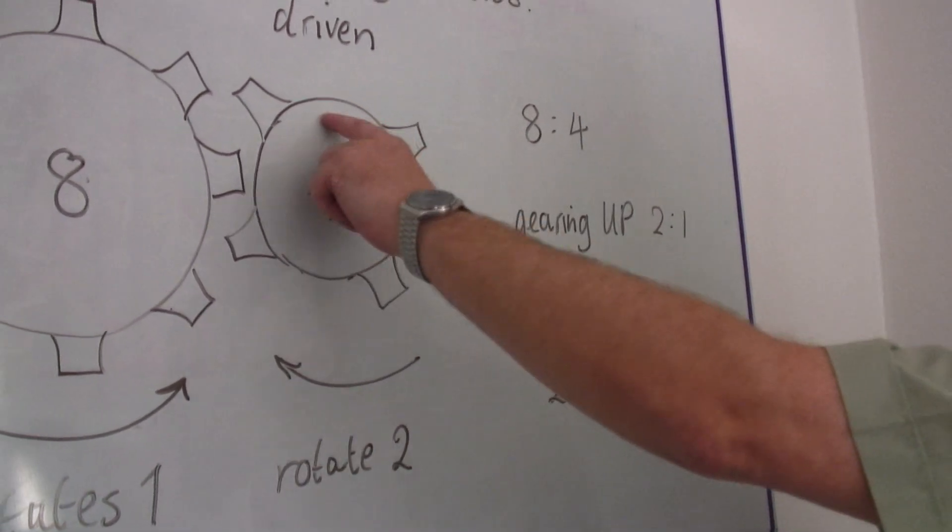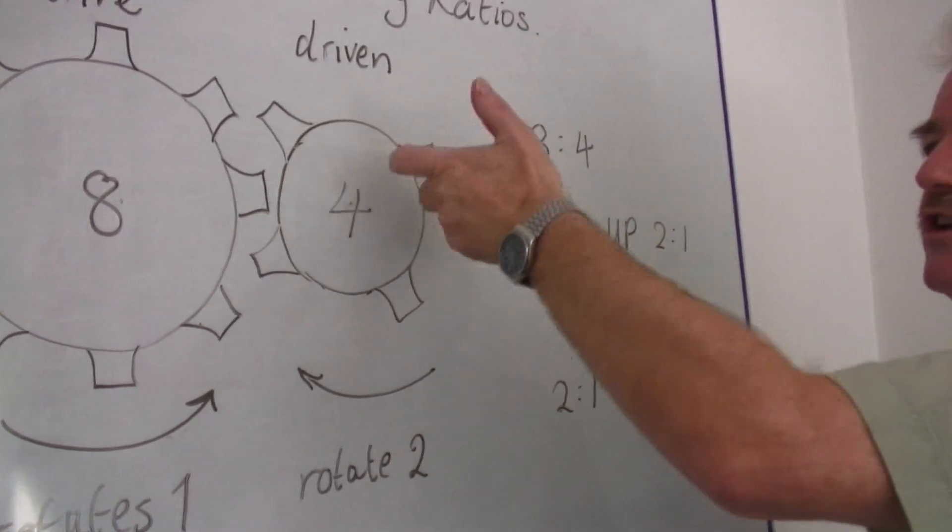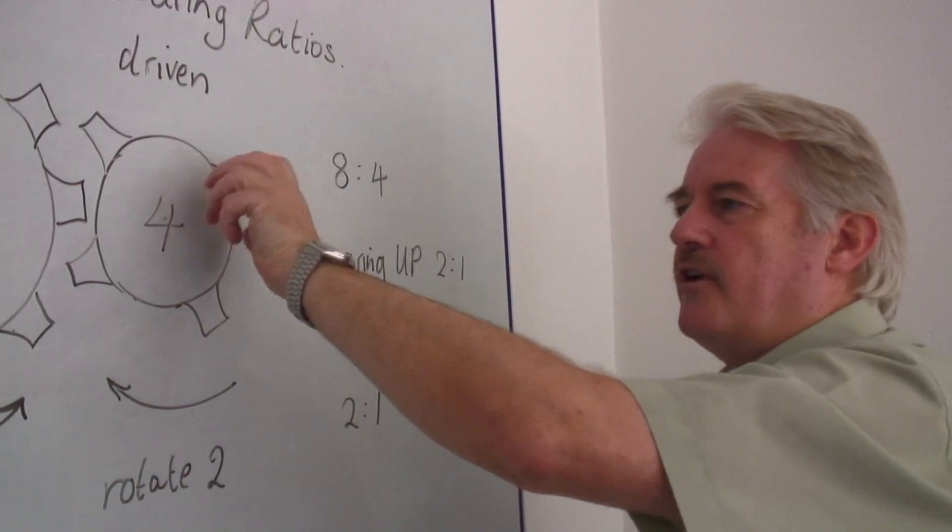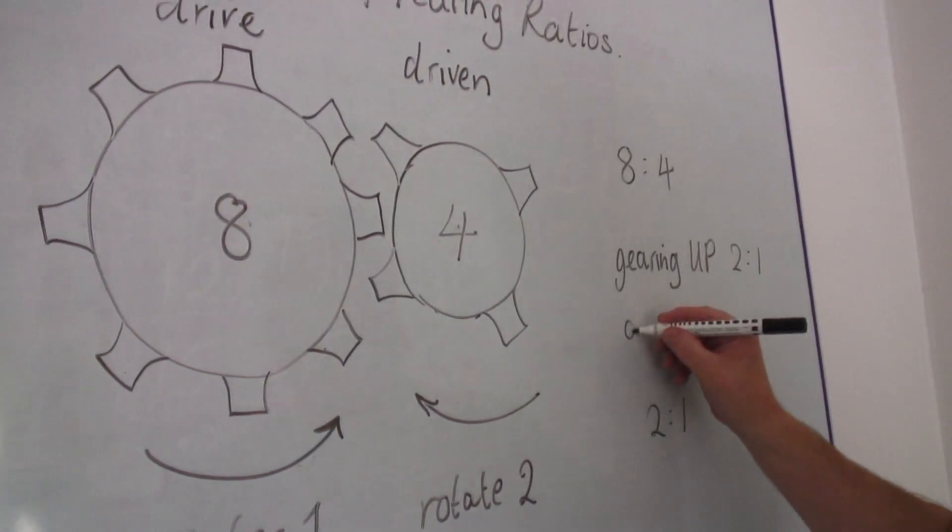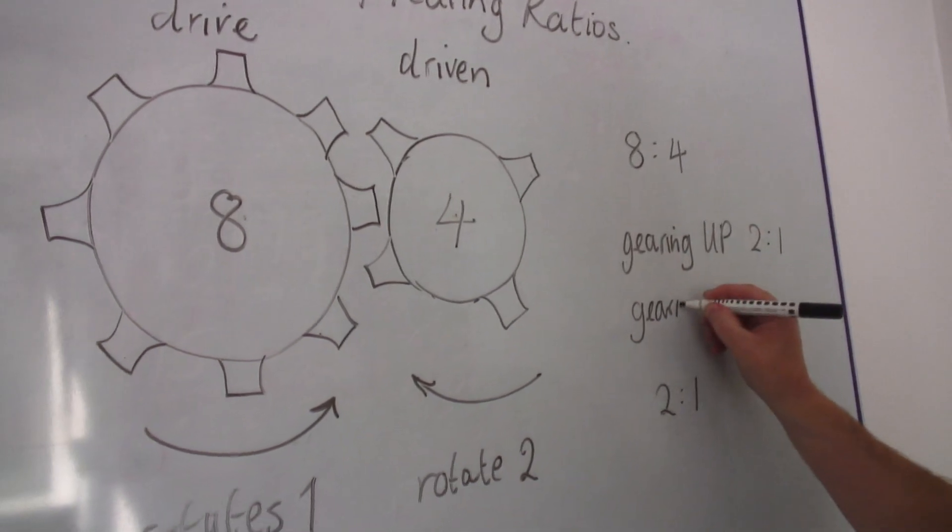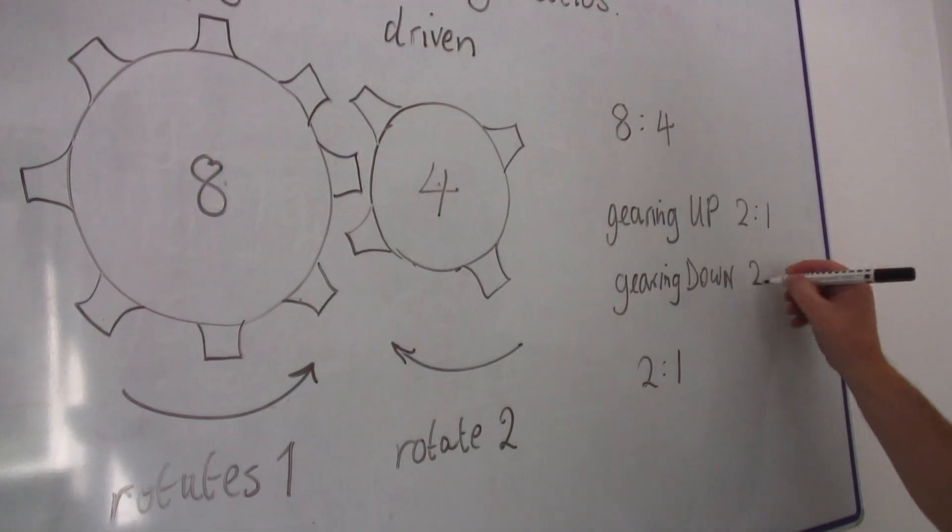However if this was the drive gear, if this was the one I was turning, I will find that this one will turn slower and then I would say a gearing down of two to one.